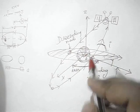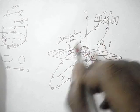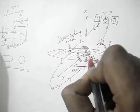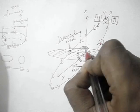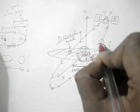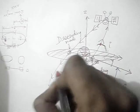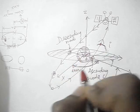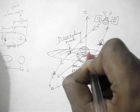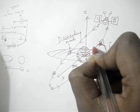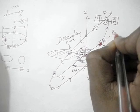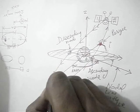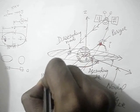In an elliptical orbit, there will be a point where the satellite will maintain the least distance with the earth, and opposite to this will be a point where the satellite maintains the maximum distance with the earth. The point where the satellite maintains the least distance with the earth is called the perigee, and the point where the satellite maintains the maximum distance is called the apogee.